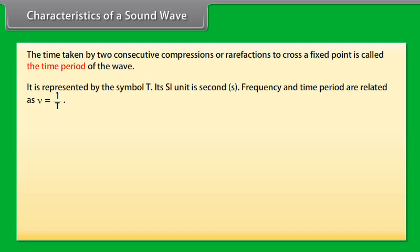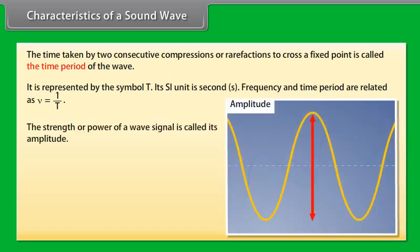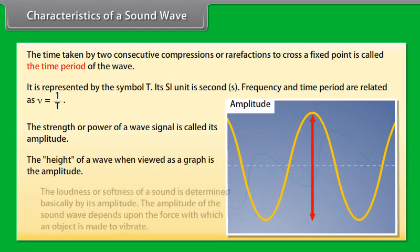The strength or power of a wave signal is called its amplitude, or the height of the wave when viewed as a graph is the amplitude. The loudness or softness of a sound is determined basically by its amplitude. The amplitude of the sound wave depends upon the force with which an object is made to vibrate.